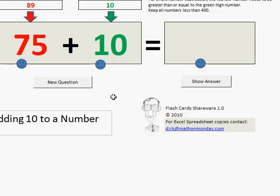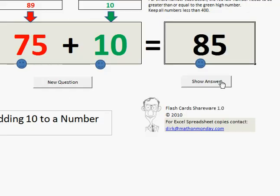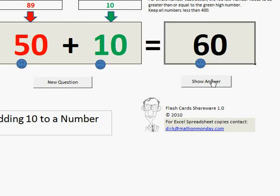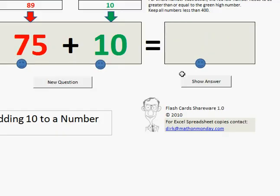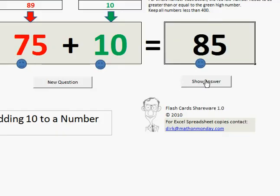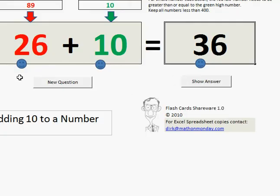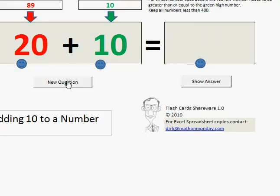75 plus 10, 85. 50 plus 10, 60. 75 plus 10, 85. 26 plus 10, 36. 20 plus 10 is 30.